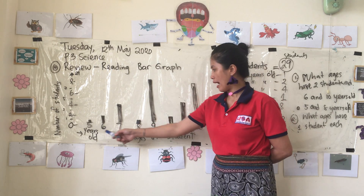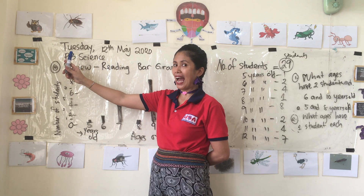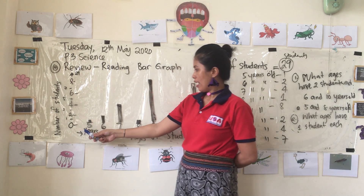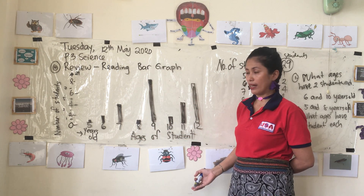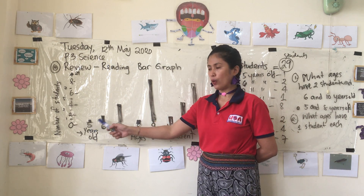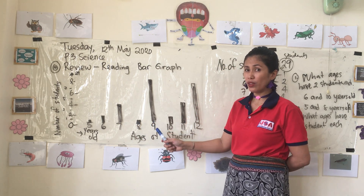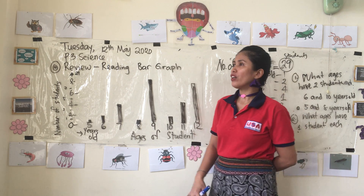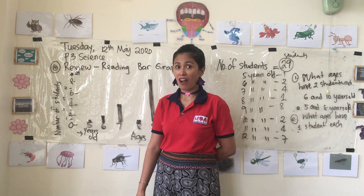On this side it shows the number of students — how many students are being asked. There are 29 students. And on this side are the ages of the students: five years old, six years old, seven years old, eight years old, nine years old, ten, eleven, and twelve.